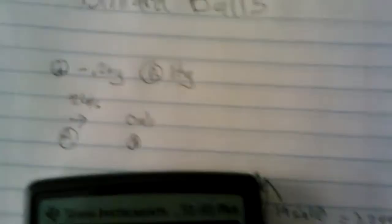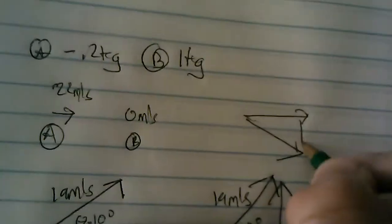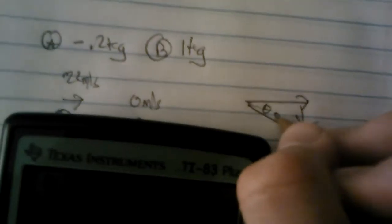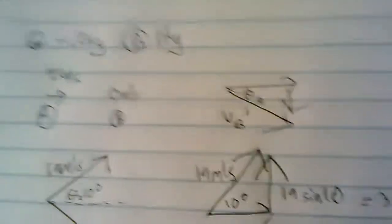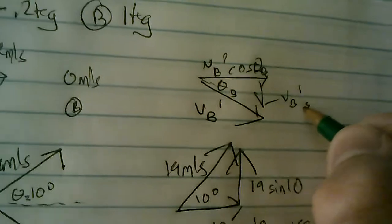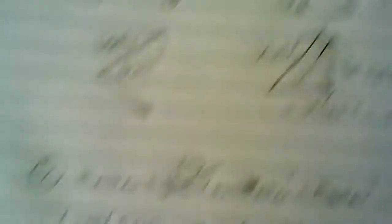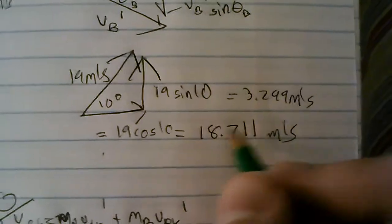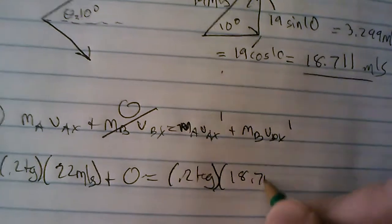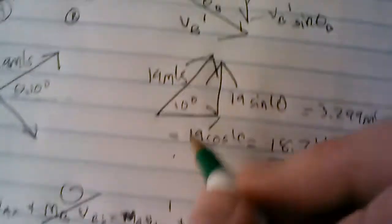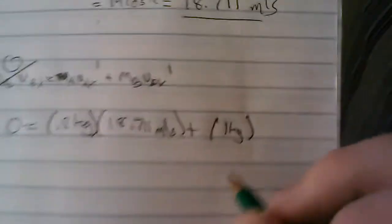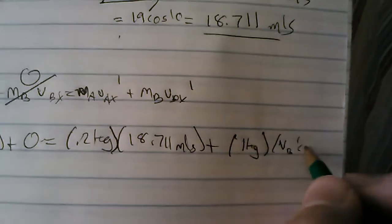So there are two unknowns in this, so we're not going to be able to solve for anything. We'll call this theta B. We'll call this VB tick. So this is going to be VB tick cosine of theta B. This will be VB prime. VAX right here would be 18.711 meters per second, plus the mass of B is 1 kilogram. VB in the X direction is VB prime cosine of theta B.